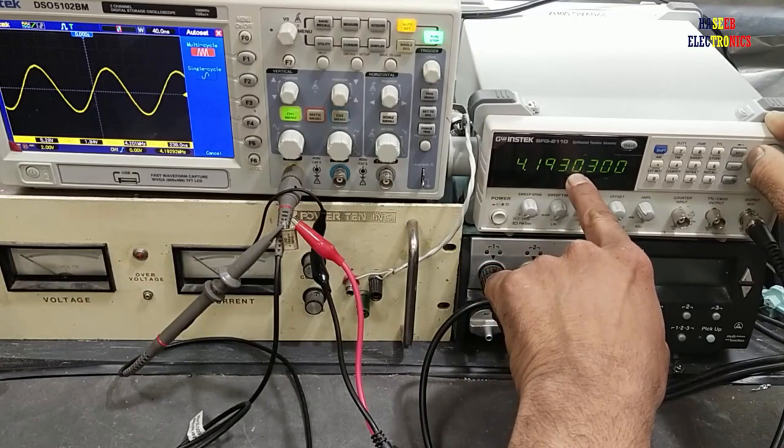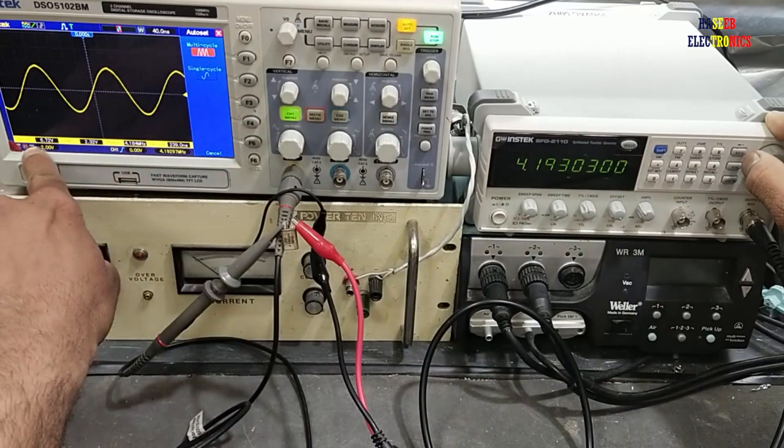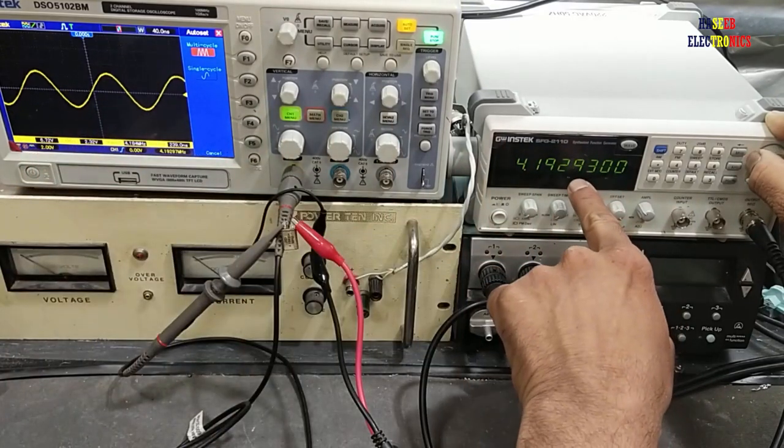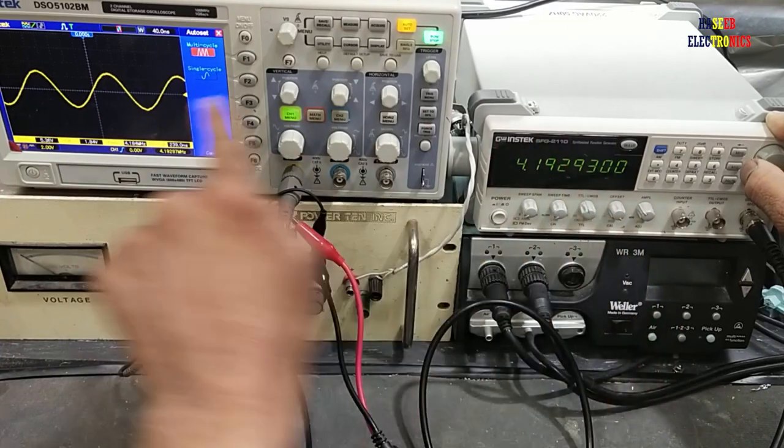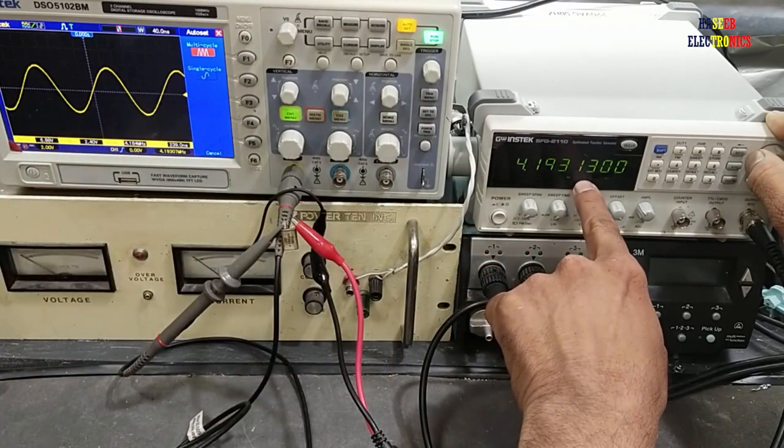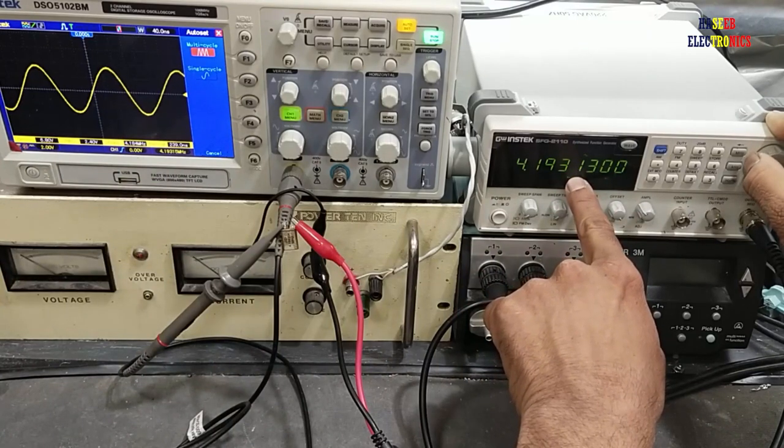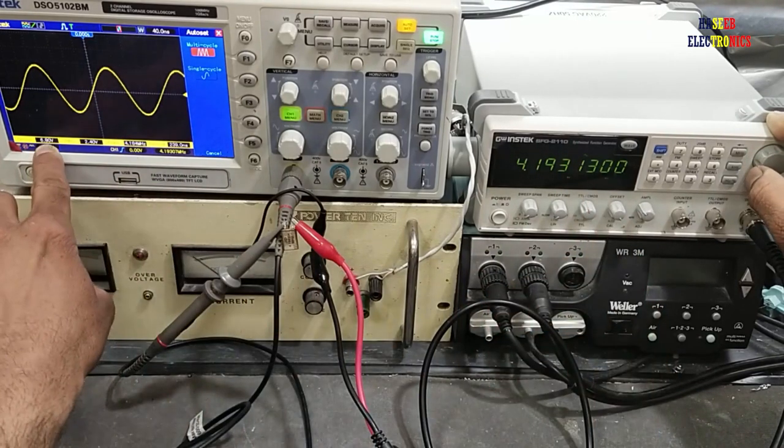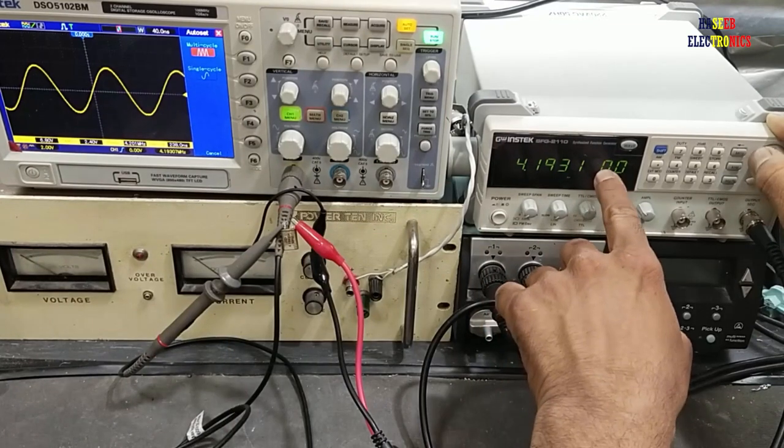Testing decimal precision: at 4.1930, the voltage is 6.72 volts. If we make it 4.1929, it's 5.28 volts. And if we make it 4.1931, the voltage remains stable. Now we will move to the lower digit for finer adjustment.